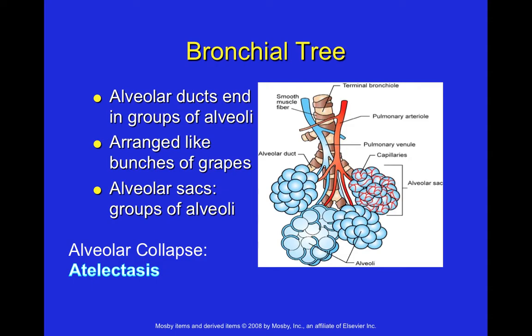The bronchial tree contains alveolar ducts and groups of alveoli. Alveoli are tiny grape-like structures — approximately cell-sized — that cluster together. They are filled with a gel-like fluid and are responsible for the cellular exchange of carbon dioxide for oxygen; this is where oxygen is absorbed into the body. Alveolar sacs are small groups of alveoli, and alveolar ducts involve capillaries and arterioles — tiny vessels that connect them in order to deposit and exchange carbon dioxide and oxygen.